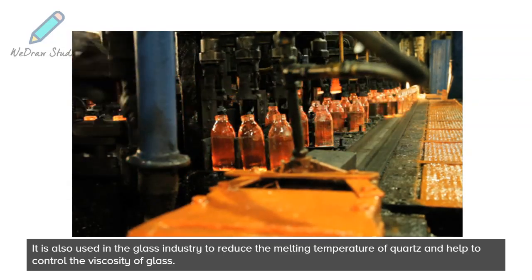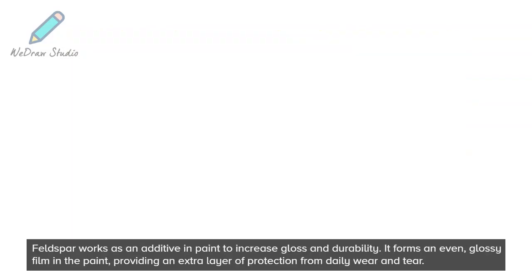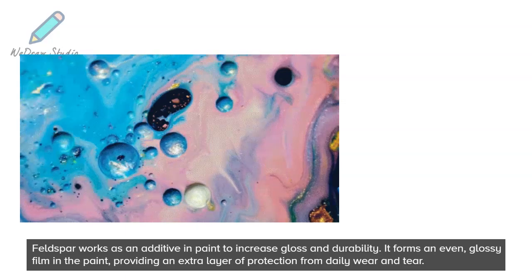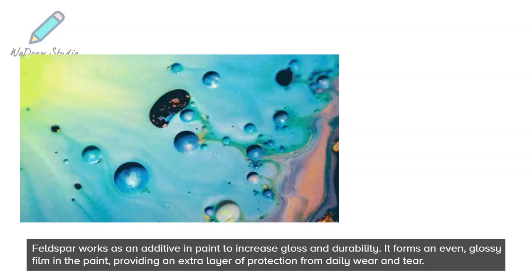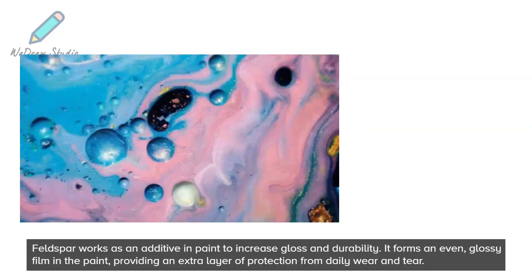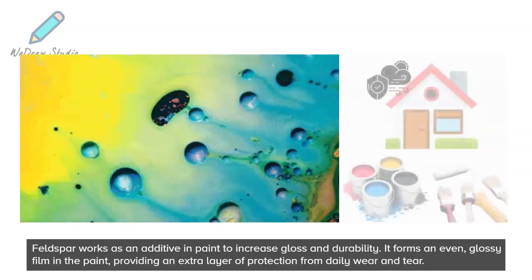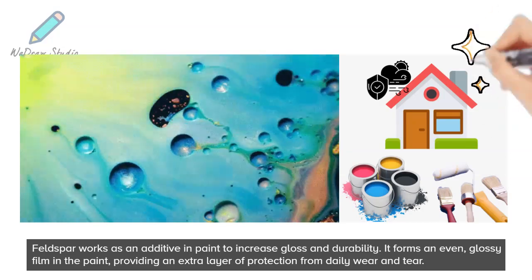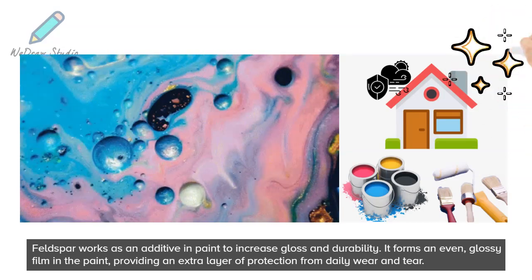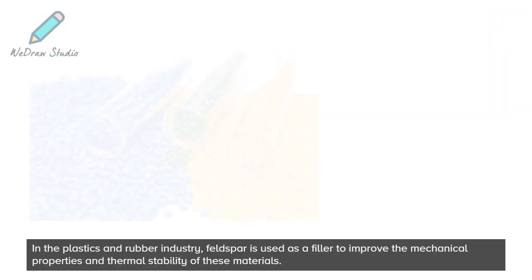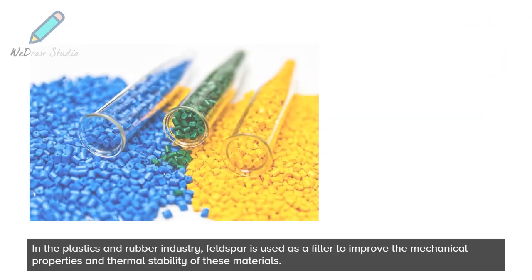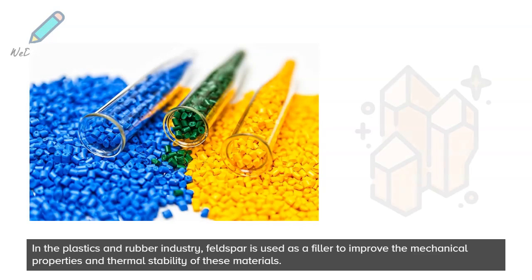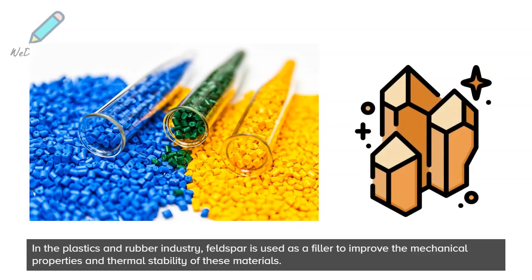Feldspar works as an additive in paint to increase gloss and durability — it forms an even, glossy film in the paint, providing an extra layer of protection from daily wear and tear. In the plastics and rubber industry, feldspar is used as a filler to improve the mechanical properties and thermal stability of these materials.